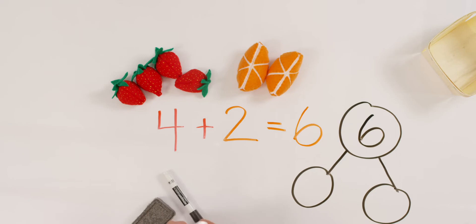How many strawberries do we have? Four. And how many oranges were there? Two. Four and two make six. And what's the opposite? You got it. Two and four make six.